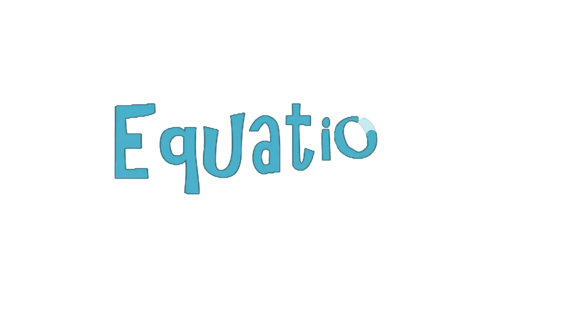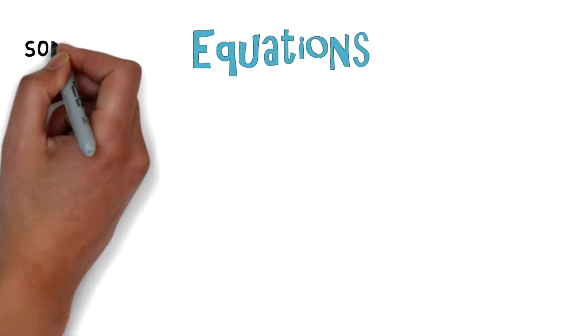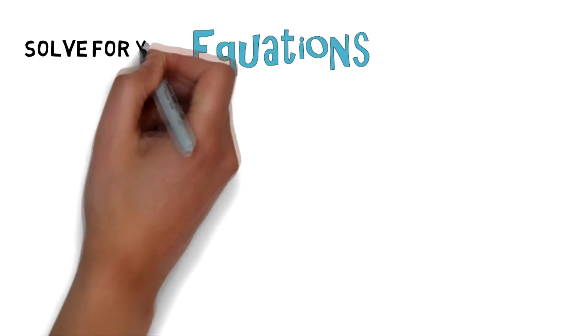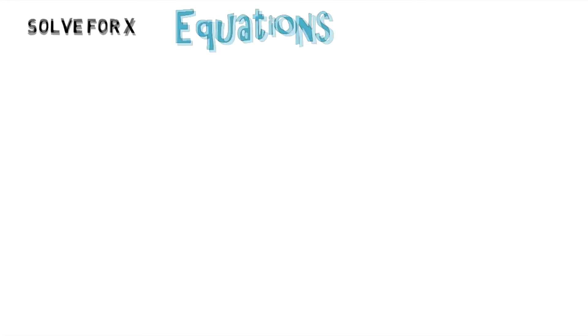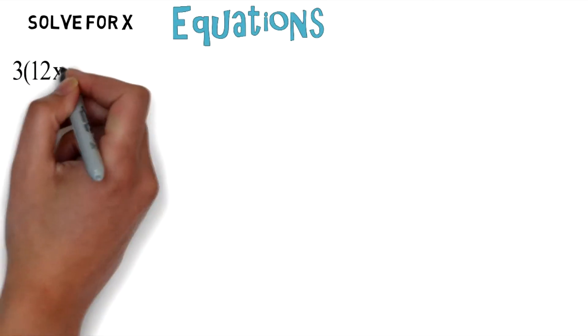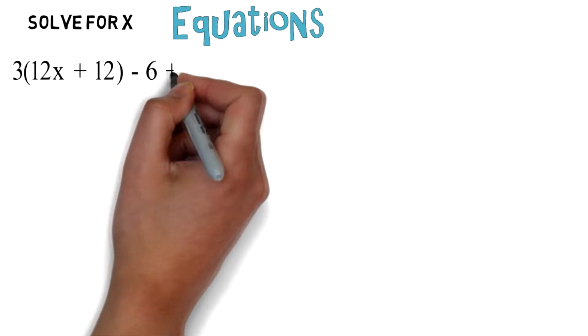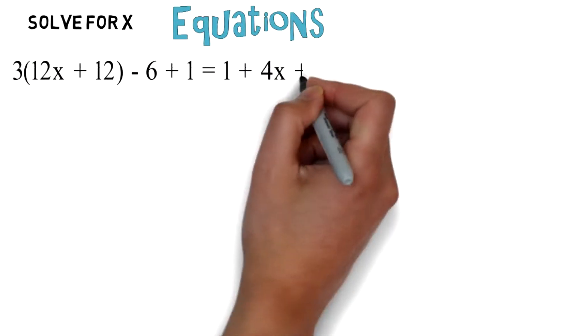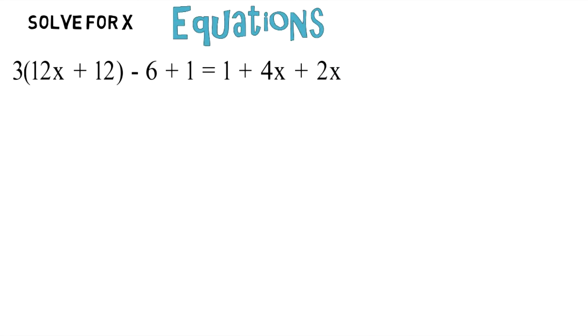The topic for this lesson is equations. In this lesson, you're asked to solve for x. You're given the equation 3(12x + 12) - 6 + 1 = 1 + 4x + 2x.